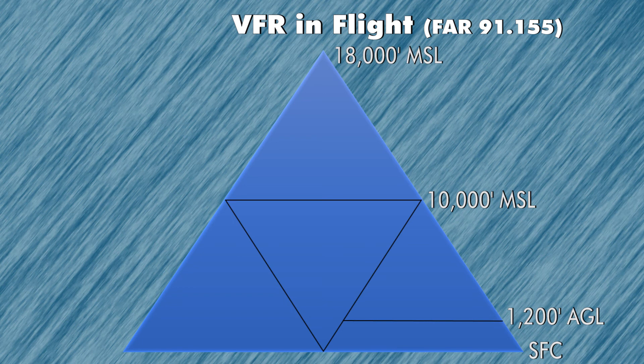On the bottom right, we have Class Golf airspace. In order for you to be VFR in Class Golf airspace below 1,200 feet AGL, you have to have at least one statute mile of visibility, and you have to be clear of clouds.